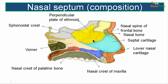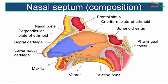To summarize: posterosuperiorly is the perpendicular plate of the ethmoid bone; posteroinferiorly is the vomer; anteroinferiorly is the septal cartilage and the lower nasal cartilage. Thus two bones and two cartilages comprise the nasal septum.